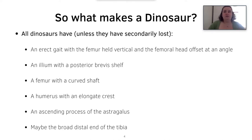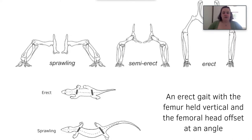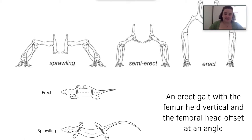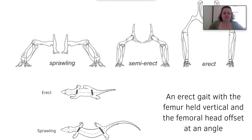So what makes a dinosaur? All dinosaurs have, unless they've been secondarily lost, all of these features. First is an erect gait with the femur held vertical and the femoral head offset at an angle. If you look at modern reptiles today, the sprawling gait is what a lizard has, semi-erect is what crocodiles have, and erect is what dinosaurs have, as well as modern mammals. The sprawling gait means they move diagonally one at a time, semi-erect combines sprawling and erect, and erect is standing upright moving as we do today.